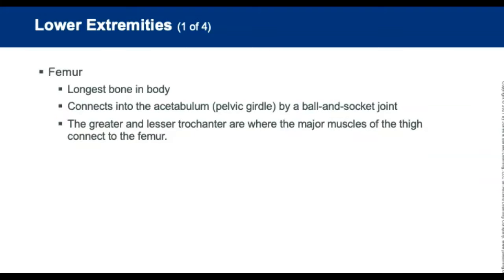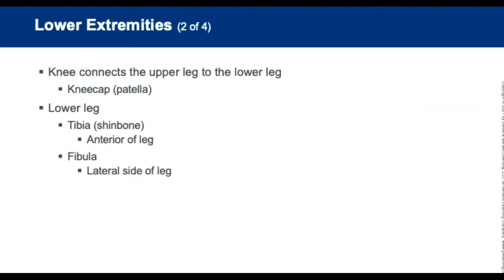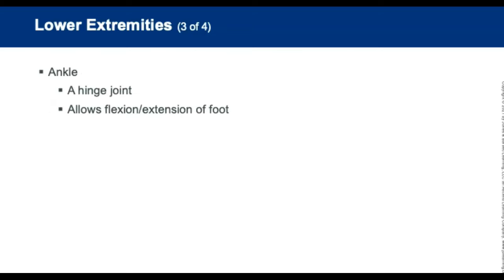Moving to the lower extremities: the femur is the longest and one of the strongest bones in the body. The femoral head connects to the pelvic girdle by a ball and socket joint. The greater and lesser trochanters serve as anchor points for the major muscles of the thigh. The knee is a hinged joint connecting the femur to the lower leg bones — the tibia and fibula. The foot comprises the tarsals, metatarsals, and phalanges — similar to the hand's carpals, metacarpals, and phalanges.